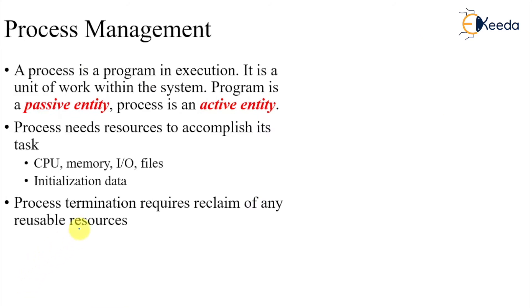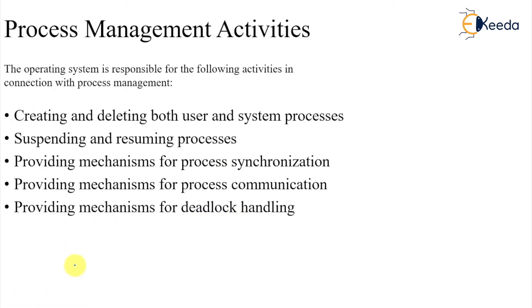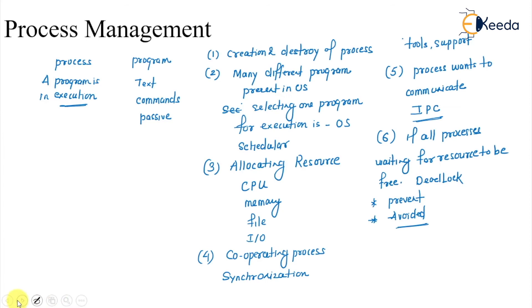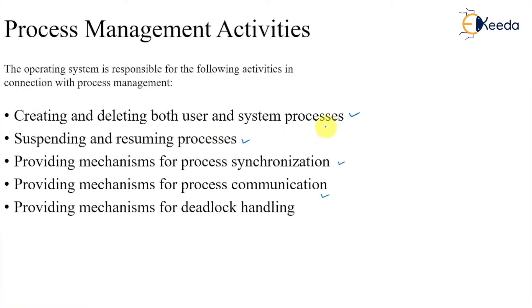To summarize: a process is a program in execution, and it is the unit of work within the system. A process is an active entity that needs resources — CPU, memory, I/O, files — and also needs initialization of data. Process termination requires reclaiming reusable resources. The different activities of process management include creating and deleting processes, suspending and resuming processes, providing mechanisms for synchronization, communication, and deadlock handling.